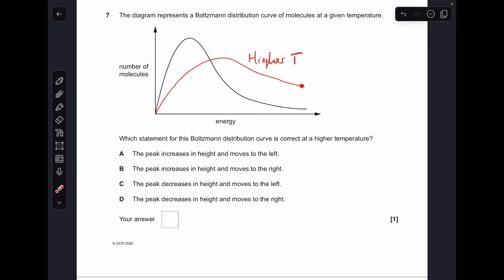Moving on, number seven. So I've already drawn up the profile of the Boltzmann curve at a higher temperature. So you can see the peak does not increase in height, it's actually lower. So we're down to C or D, and you can see again from the profile, it's shifted to the right.